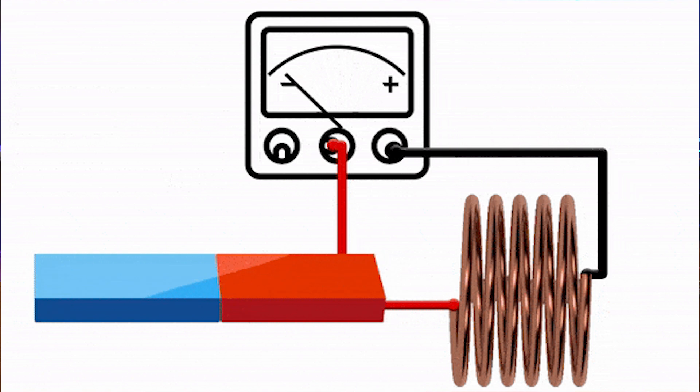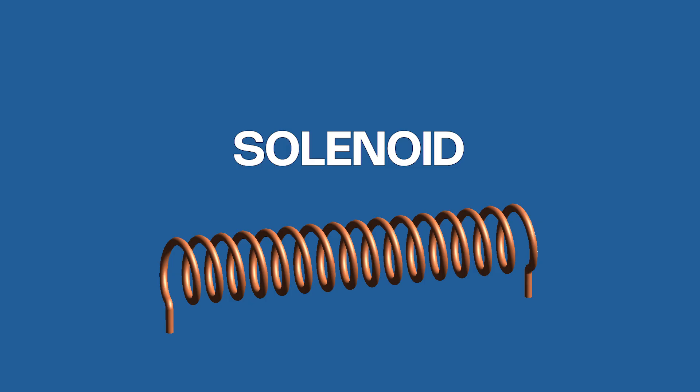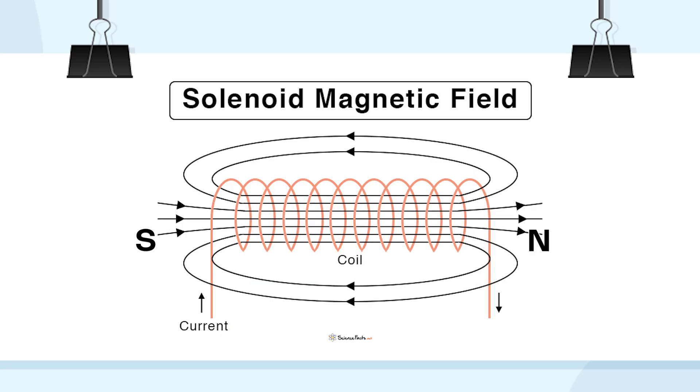The coil forming the shape of a straight tube is called a solenoid. With its core as an iron core, it pushes magnetic field from its south to north poles. And this is the exact type of electromagnet we are going to build today.